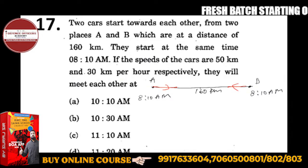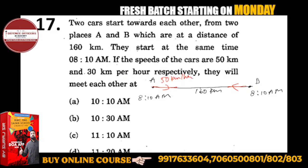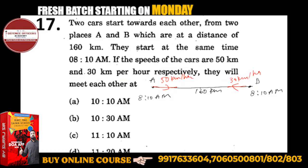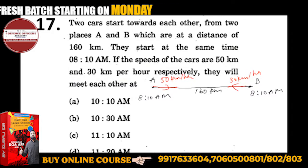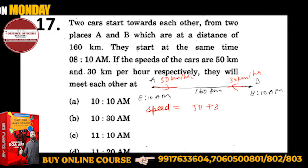One car is 50 km per hour and the other is 30 km per hour. As you all know, in the same direction we subtract the speeds, but in the opposite direction the speeds will be 50 plus 30. 50 plus 30 will be 80 km per hour.